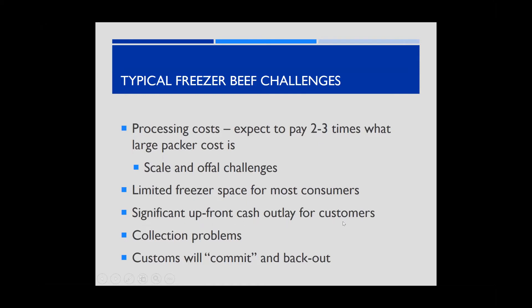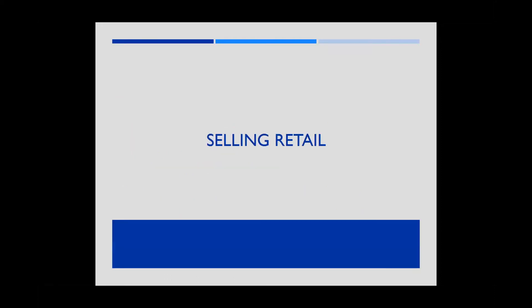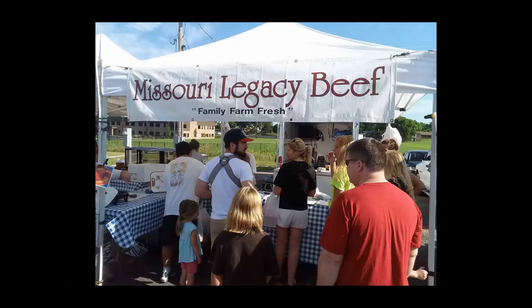Customer collection issues can arise — use a 20–25% deposit to reduce the risk of someone backing out. Another advantage of USDA-inspected facilities: if a customer backs out, labeled meat can be legally resold. With custom-exempt processing, that's not an option.